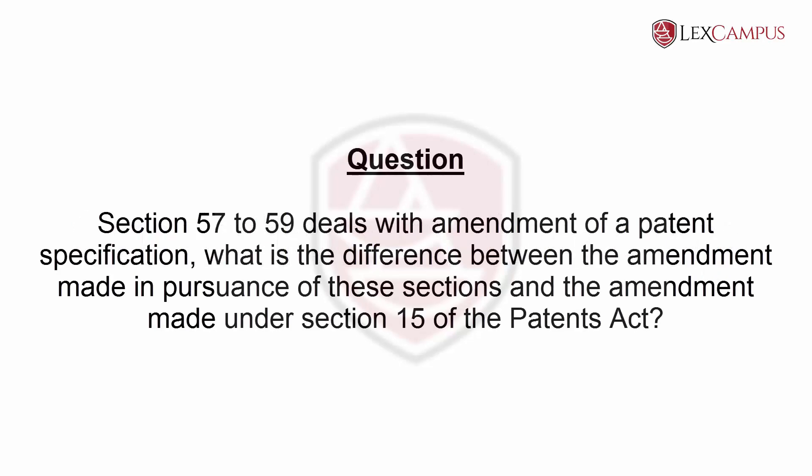Question: Sections 57 to 59 deal with amendment of a patent specification. What is the difference between the amendment made in pursuance of these sections and the amendment made under Section 15 of the Patents Act?